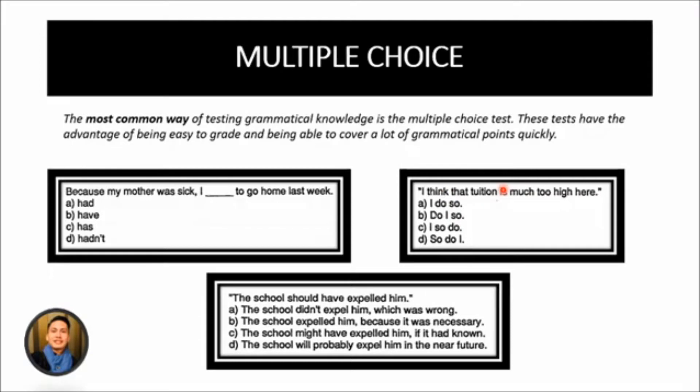Another way to test grammatical knowledge using multiple choice items is to give the testees, meaning the one who will take the test, a sentence and ask them to choose which of the four or five alternatives has the same meaning. Just like the example here. The school should have expelled him. So, you have to choose between the four items which has the same meaning with the statement above. Again, this is a test of reading comprehension as well as grammar. But in order to understand the meaning of the sentence, the reader does have to understand the grammar of words.